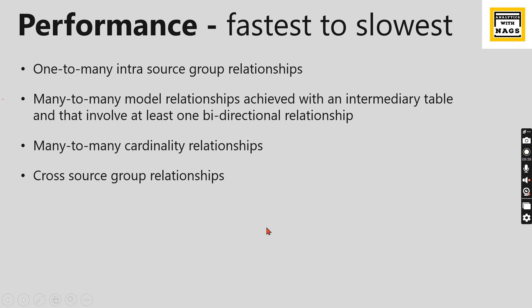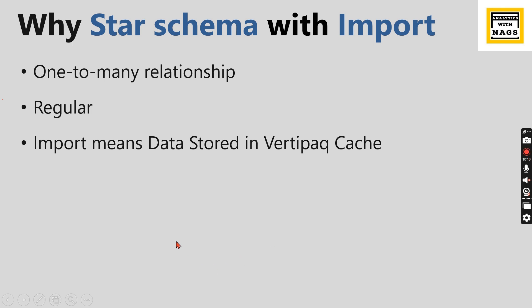In terms of performance, the order from best to worst is: one-to-many intra source group relationship, then many-to-many with an intermediate bridge table, then many-to-many cardinality, and finally cross source group. This is why we always insist on star schema — a simple one-to-many regular relationship with import mode gives you the best performance, fastest queries, and better data refresh time.